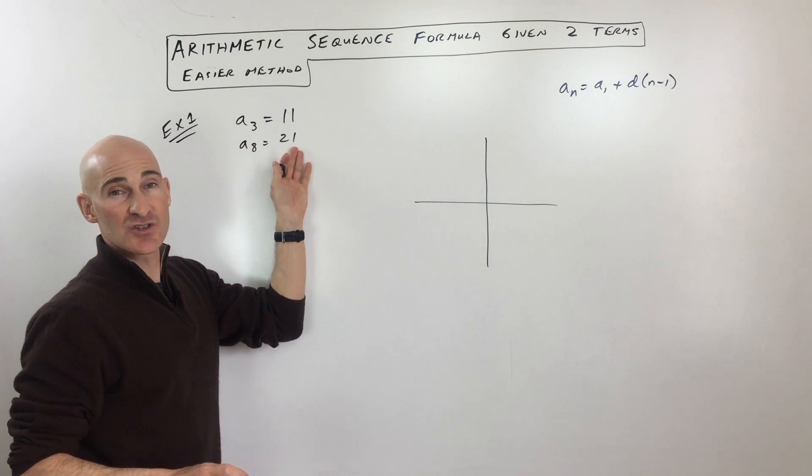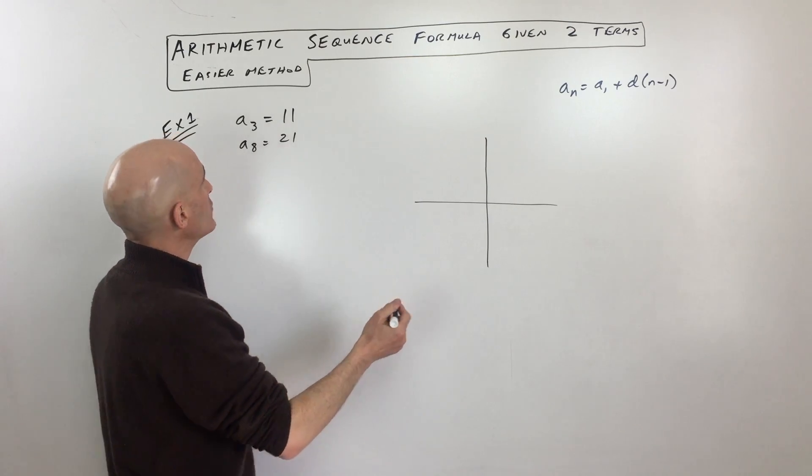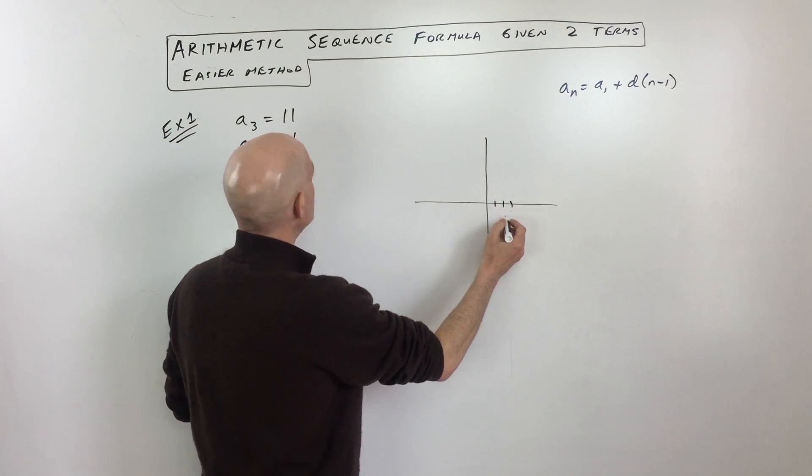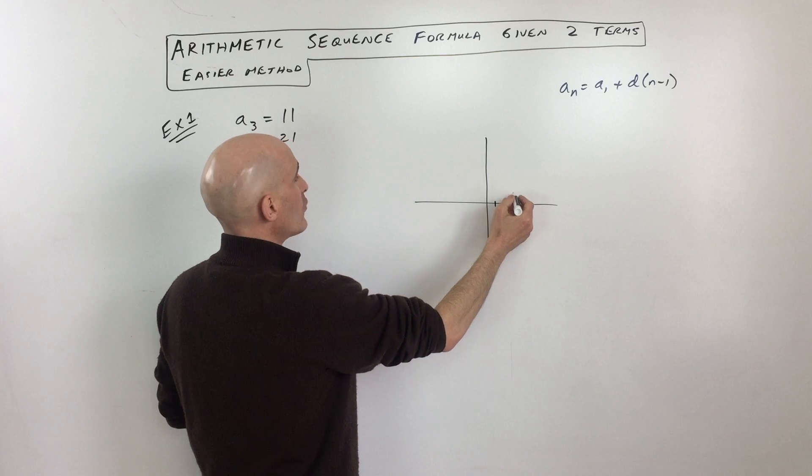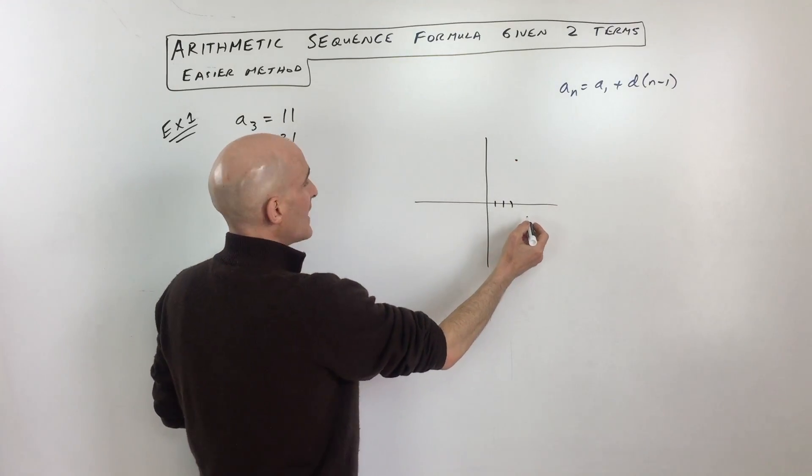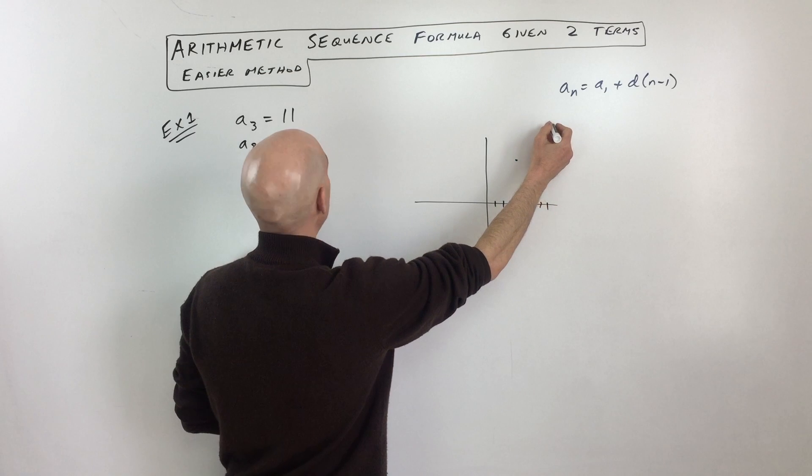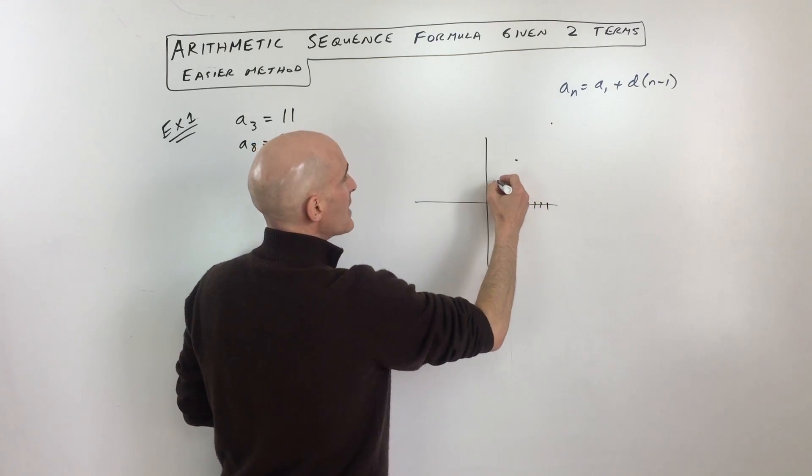If we plot these points out, you have a sub 3, the third term, up here at 11, and then a sub 8—4, 5, 6, 7, 8—is going to be up here at 21. You can see they're going up at a constant rate.